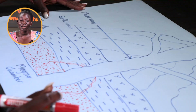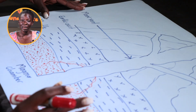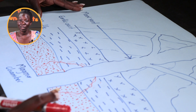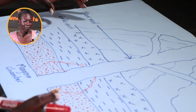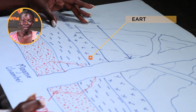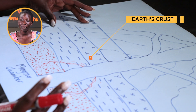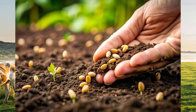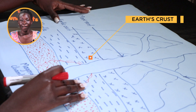Let's break this down using this simple diagram. The earth is made up of three major layers, but let's start with what we know. On the outermost part we have the earth's crust — this is the part on which we live, the part on which we grow our plants and our animals.